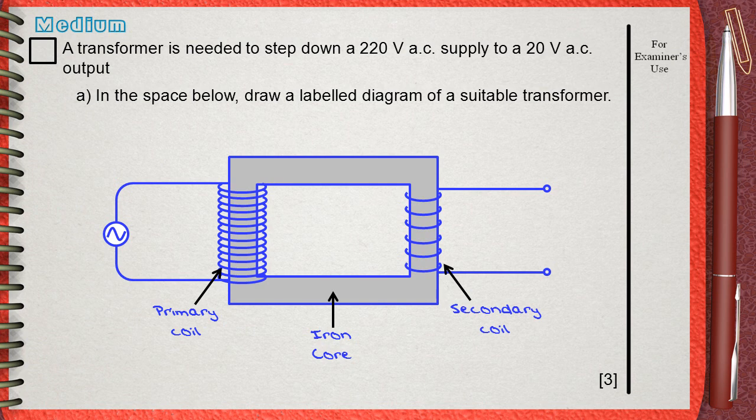Since our transformer is a step down transformer, the number of turnings of the primary coil must be greater than the number of turnings of the secondary coil. Show a suitable number of turnings according to your case.